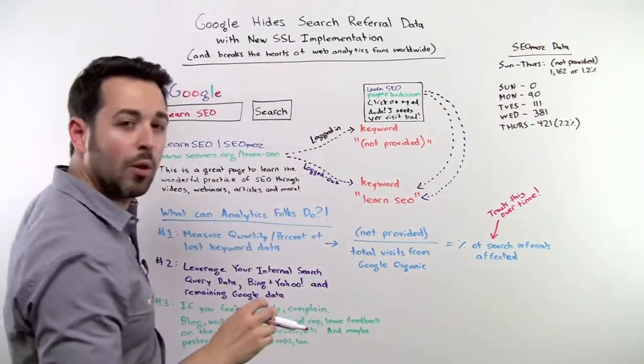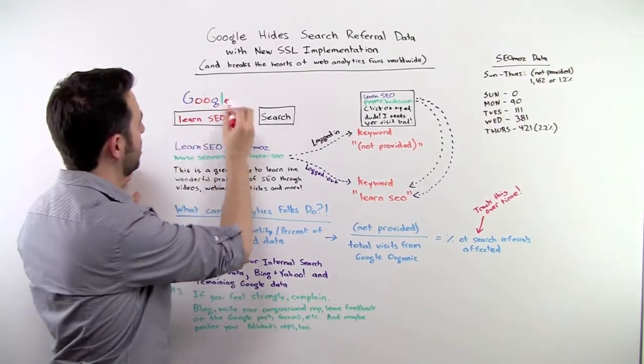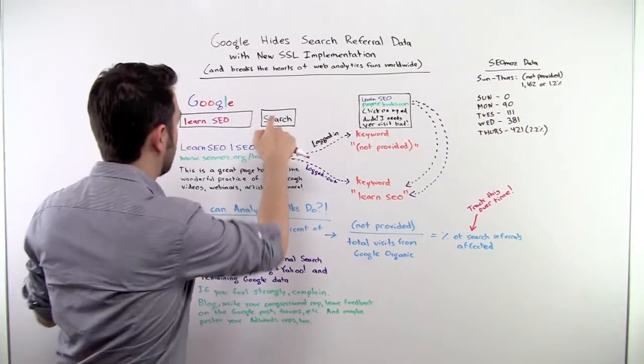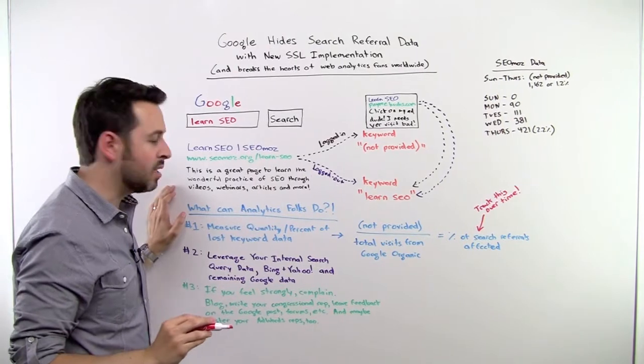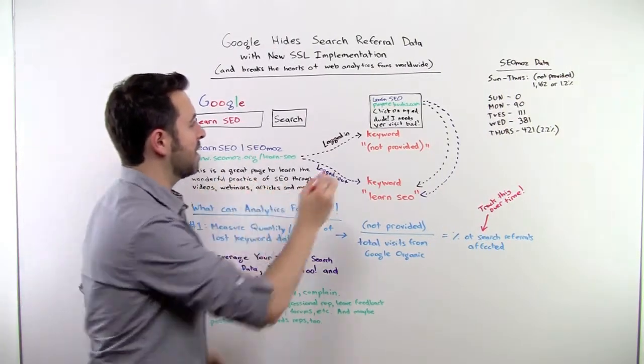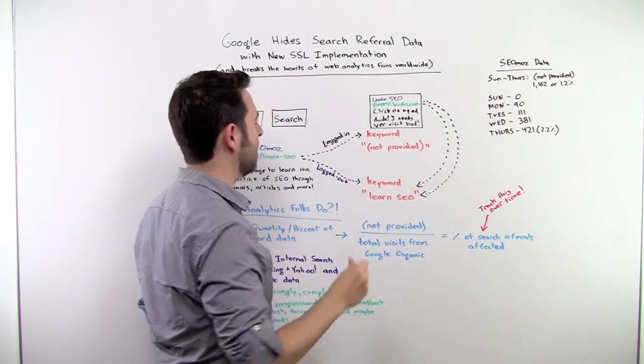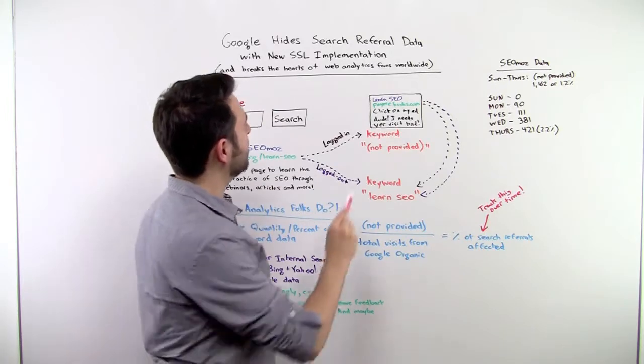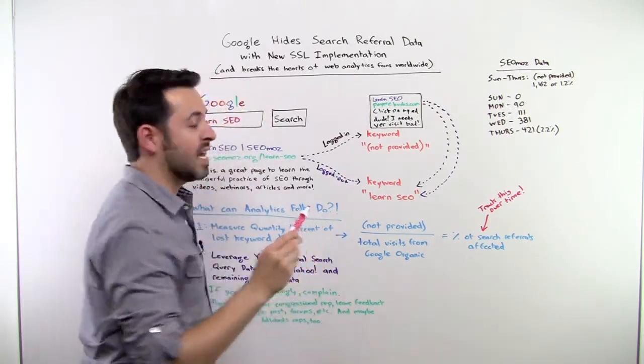Let's start by explaining what happens when you do a Google search today. For example, I've done a Google search here for Learn SEO. I click the search button and some results pop up. Here's this nice Learn SEO, SEOmoz, www.seomoz.org. And then there's an ad over here, Learn SEO from paymebucks.com. Click on my ad. Dude, I need your visits bad. That probably would not get approved by the AdWords people, but you can get the idea.